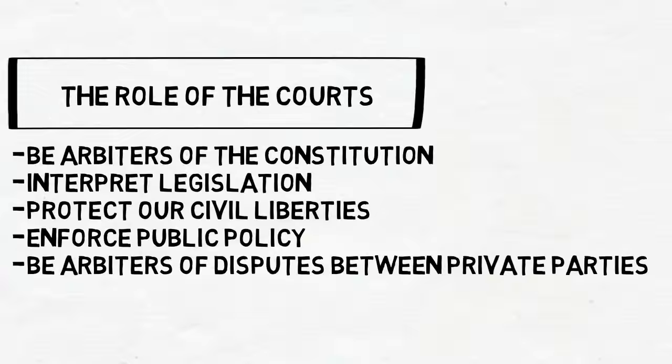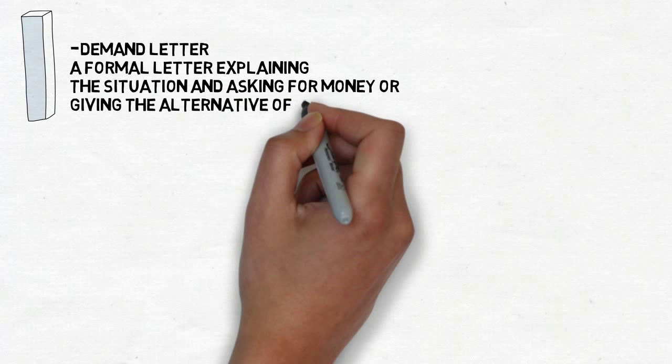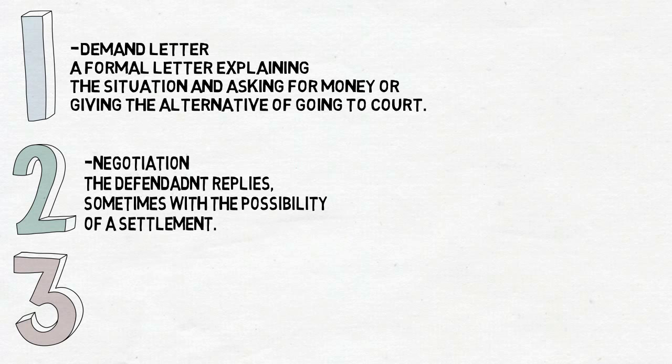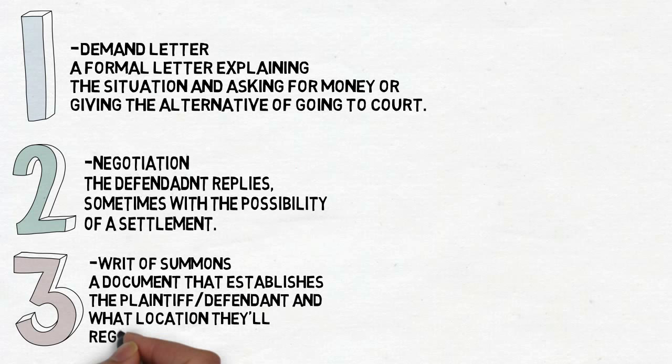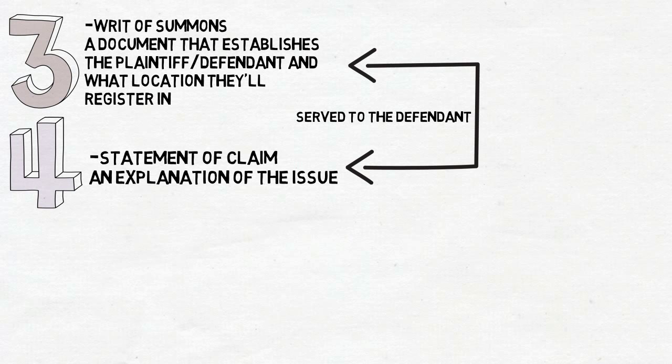The Litigation Process. First, you have the Demand Letter — a formal letter explaining the situation and asking for money or giving the alternative of going to court. Second, Negotiation, when the defendant replies, sometimes with the possibility of a settlement. Third, the Writ of Summons — a document that establishes the plaintiff and defendant and the location they'll register in. Fourth, the Statement of Claim — an explanation of the issue. Both of these are served to the defendant, and if either are ignored, the plaintiff could take default judgment and win.